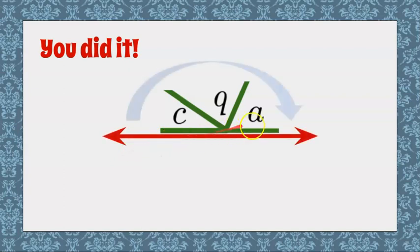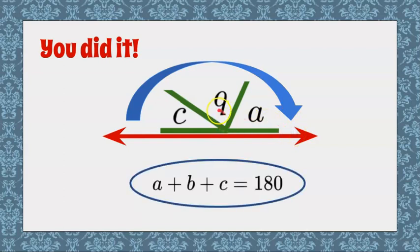So this forms a straight line. A straight line is perfectly straight because it forms a 180 degree angle. And there you have it. A, B, and C have a sum of 180 degrees.